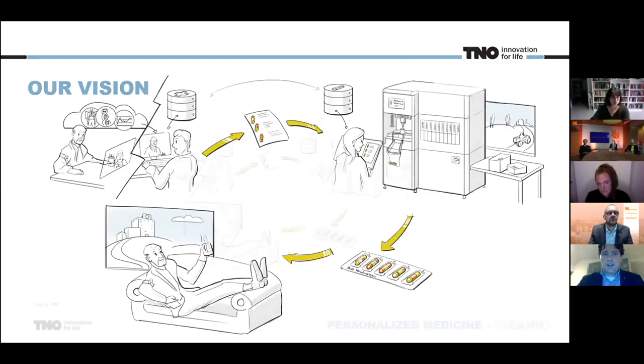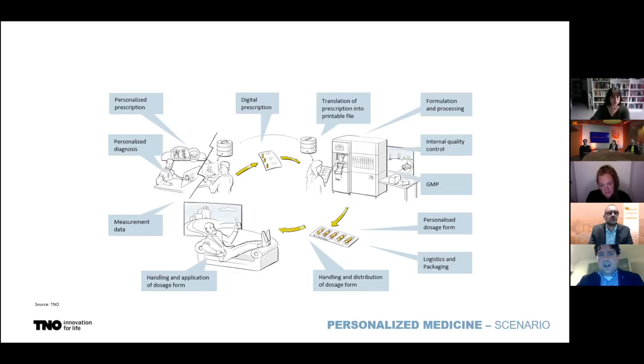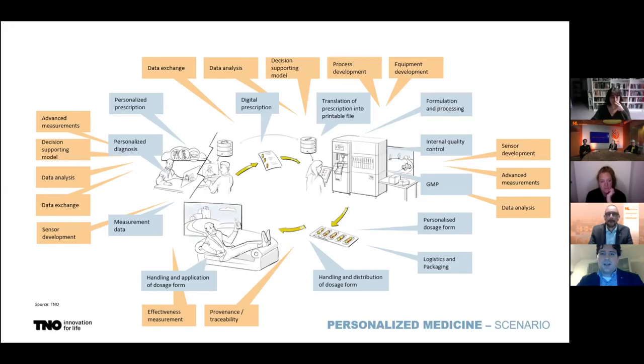If we look at it from a technology perspective, in order to get to this scenario, a lot of things need to be developed. Personalized data, personalized prescription, how to handle that data properly and safely, how to create that individual data into an individual production process, how do you deal with the material flow required for that, how do you do that safely, how do you deliver it to the person's home, how do you make sure that the patient takes his medication at the right time. For us, this groups into all kinds of different technologies that need to be developed.